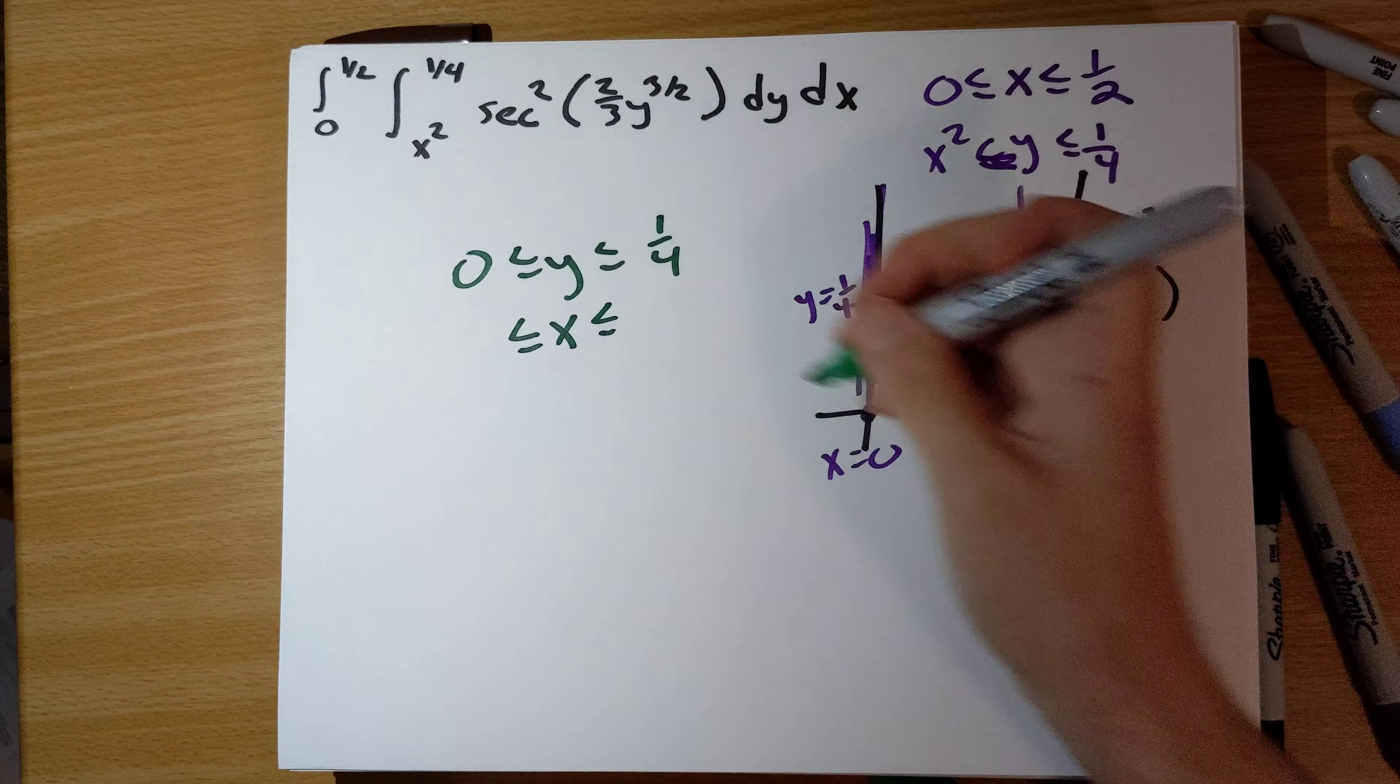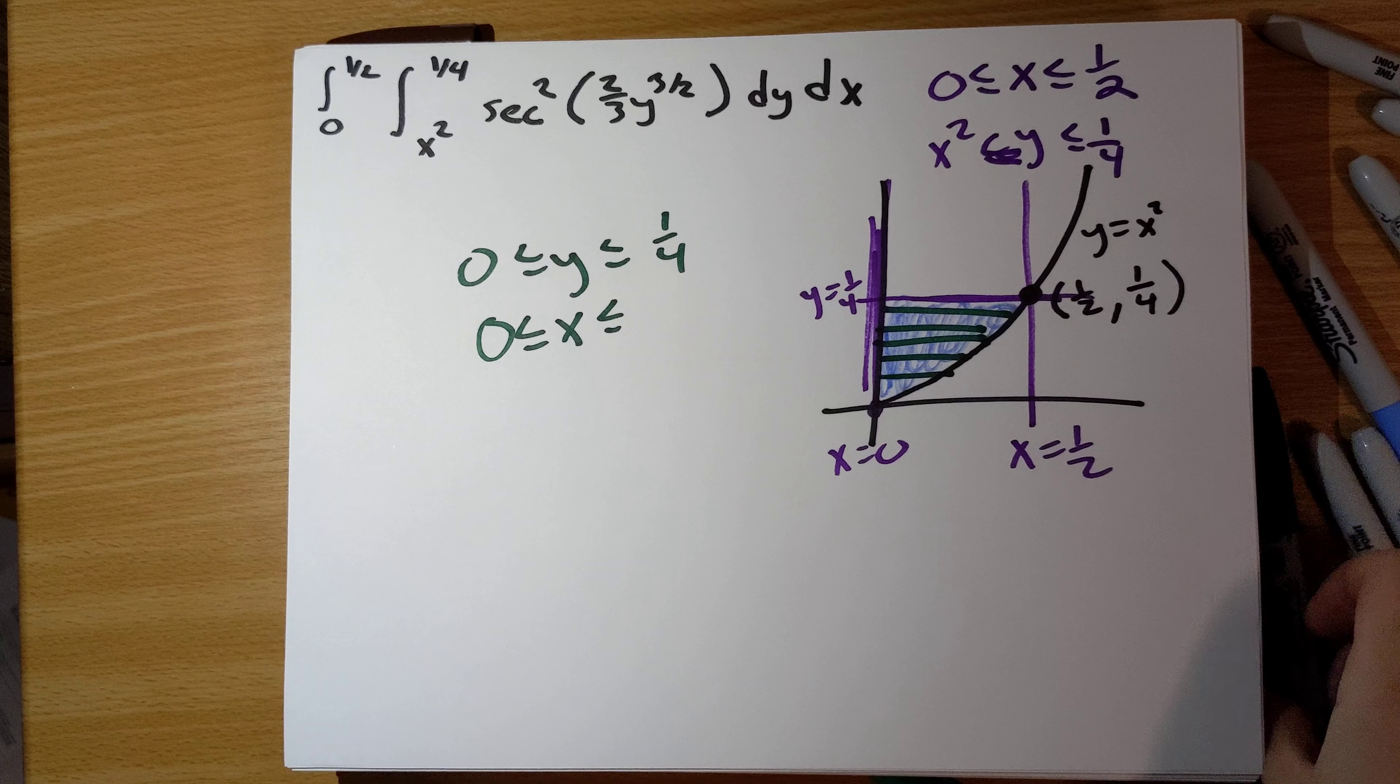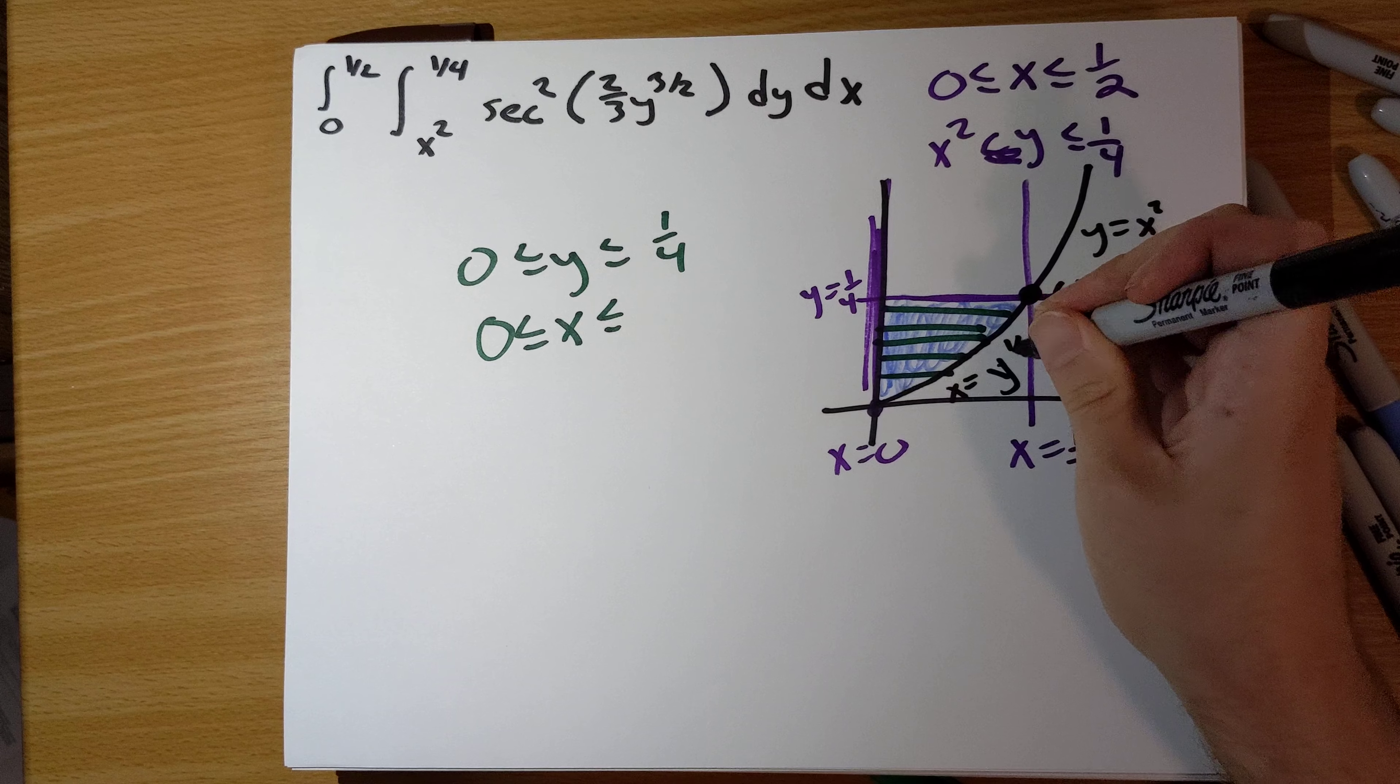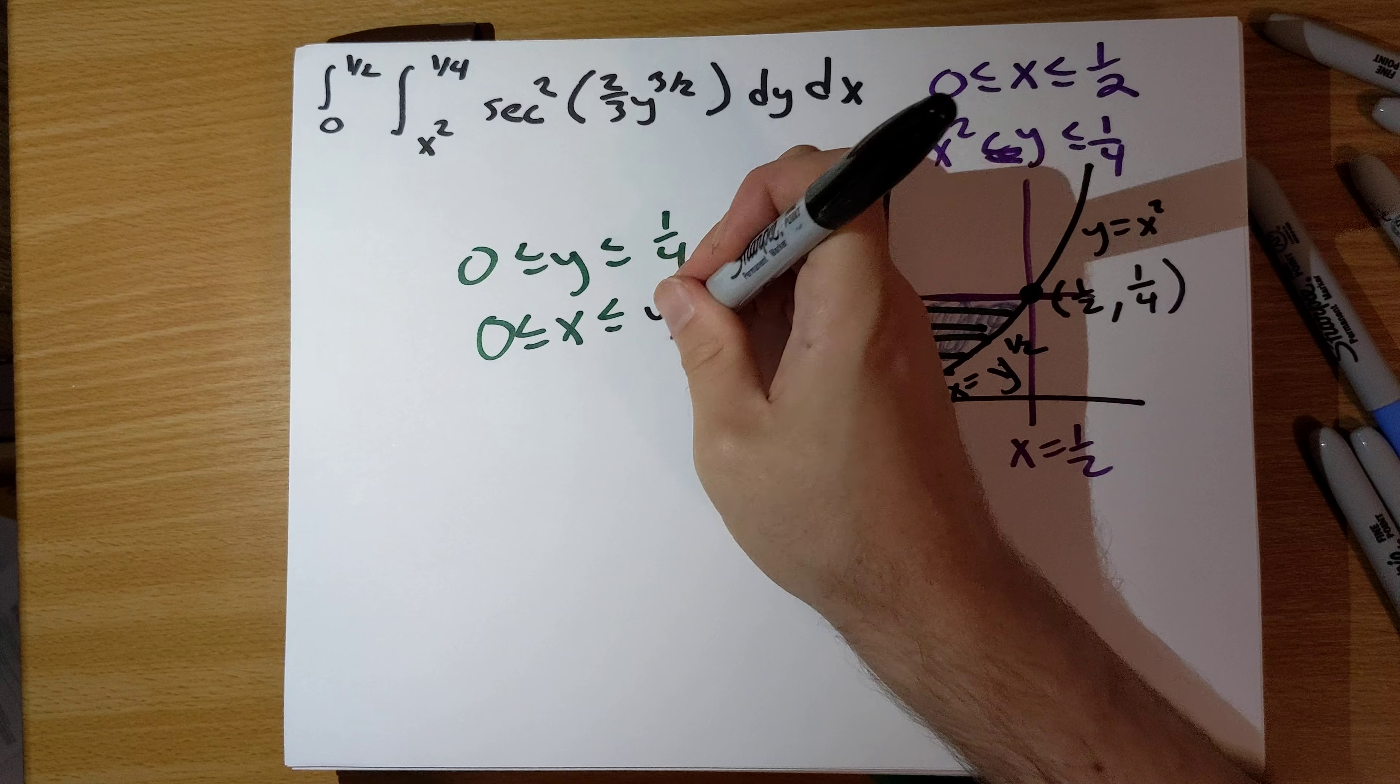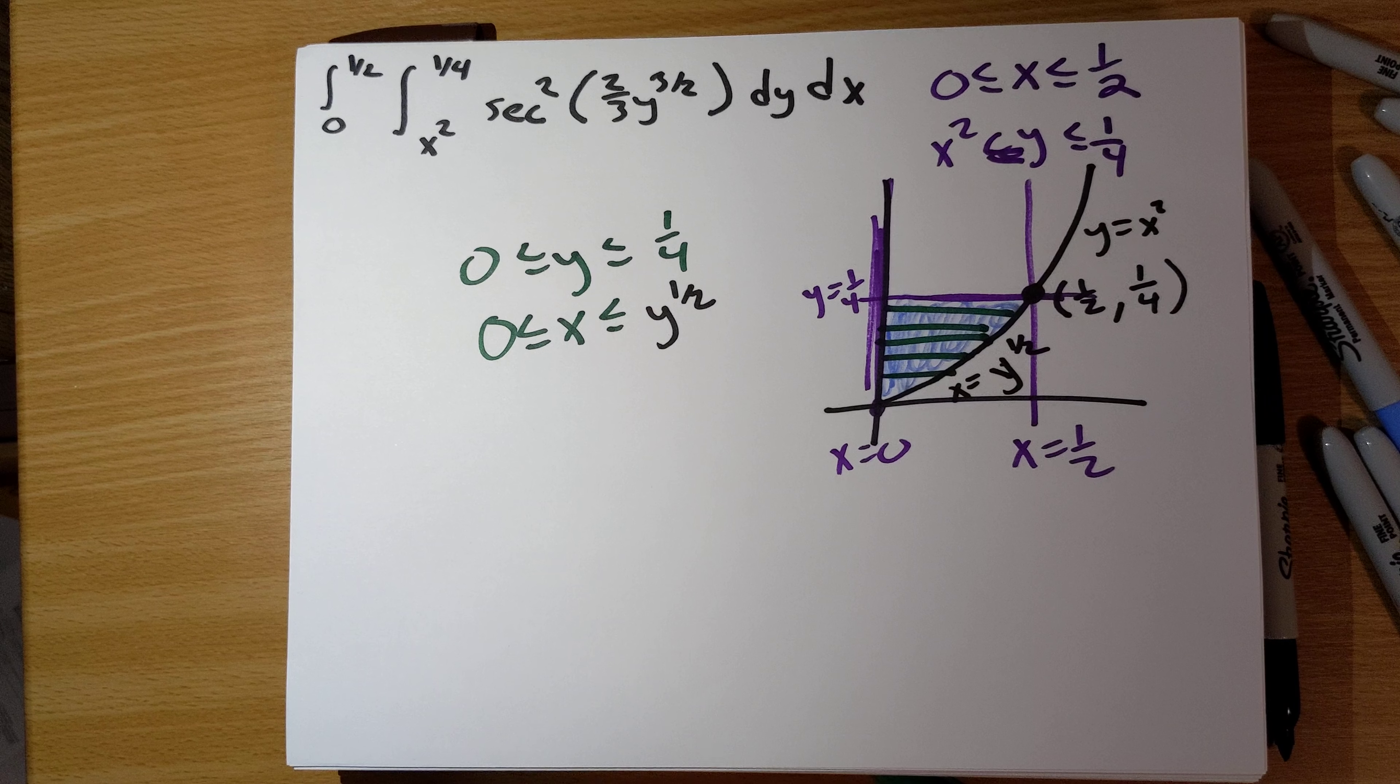x is running from 0 to this curve here. This is y equals x squared, which is x equals square root y. We take the positive square root because we're in the first quadrant.